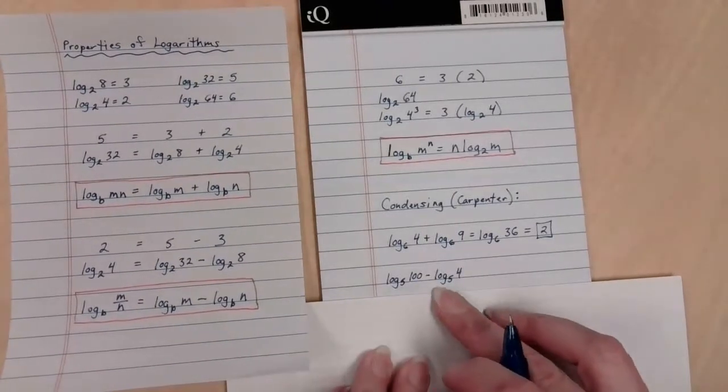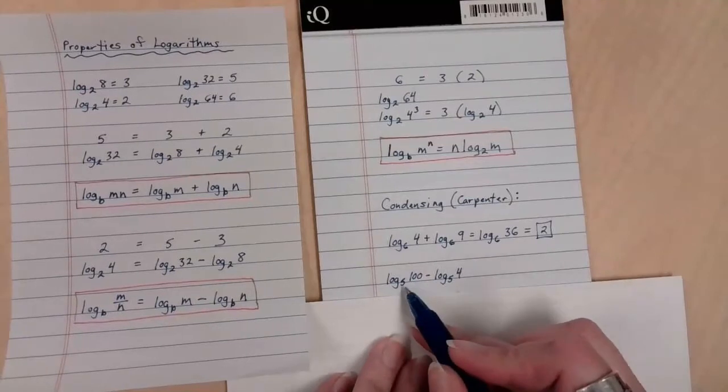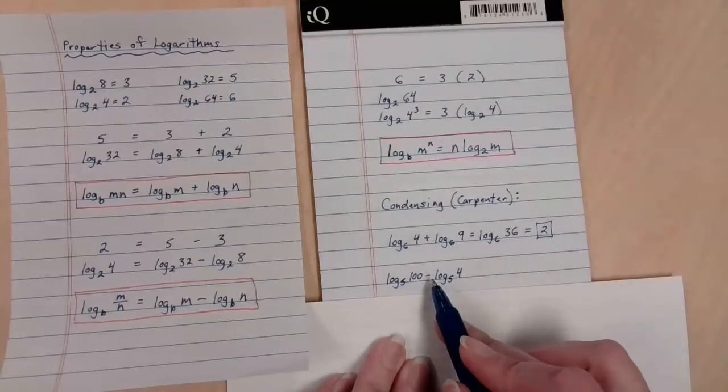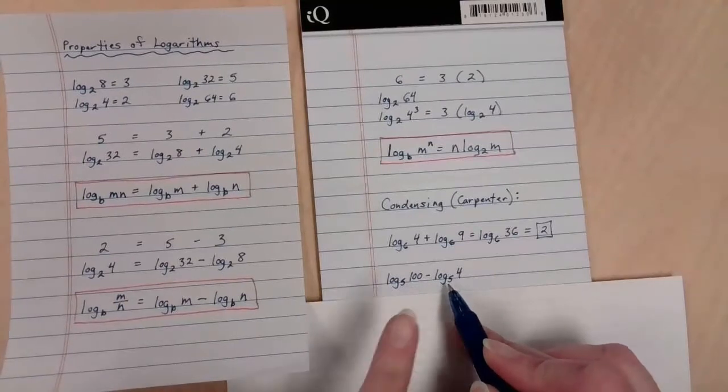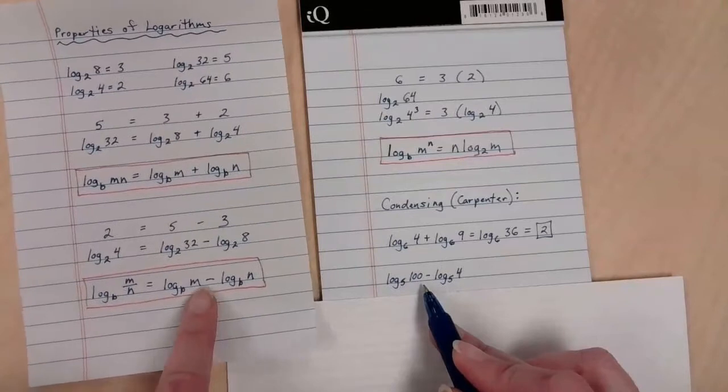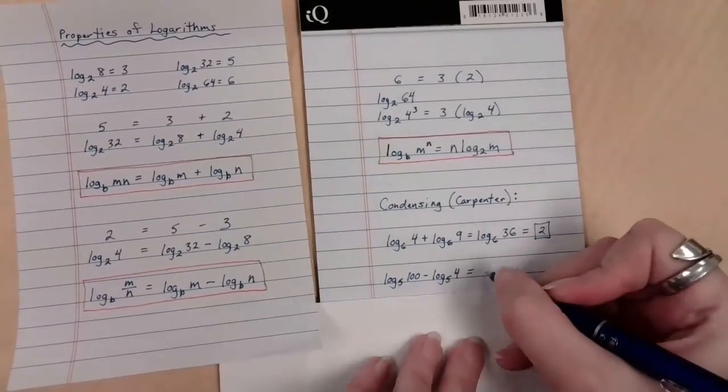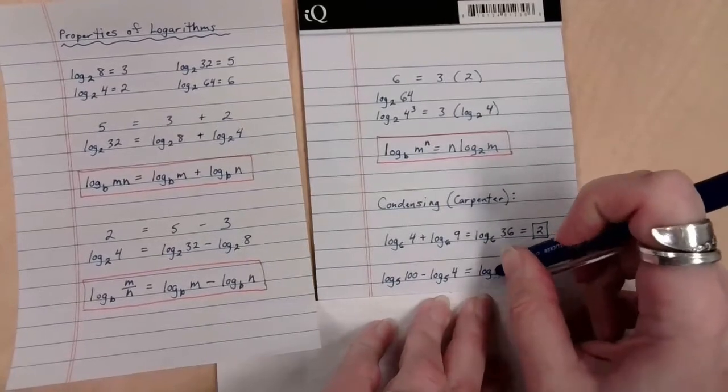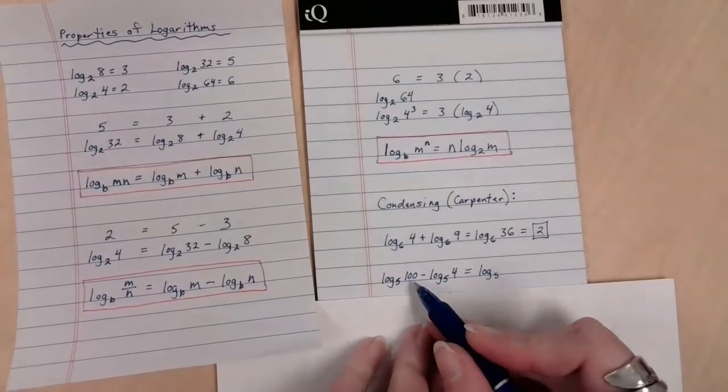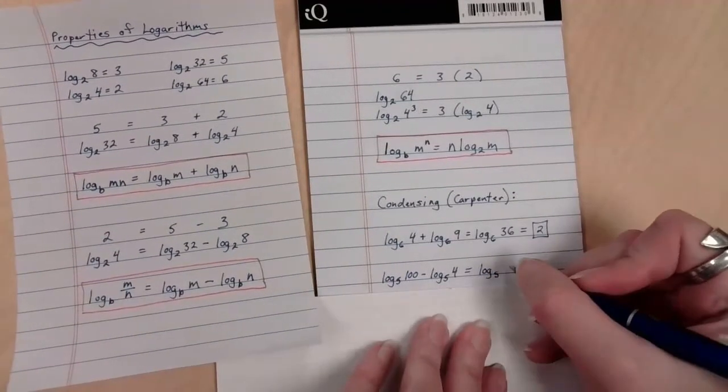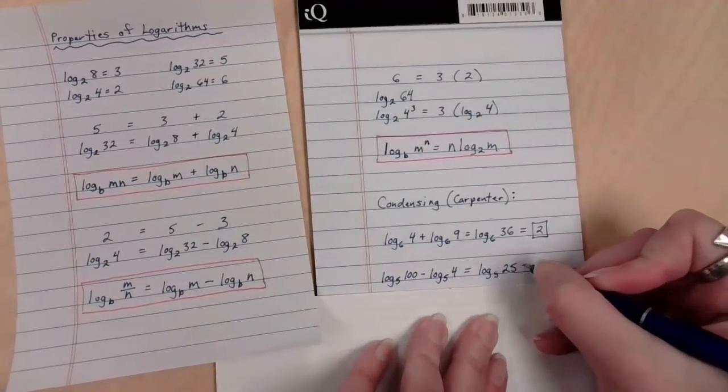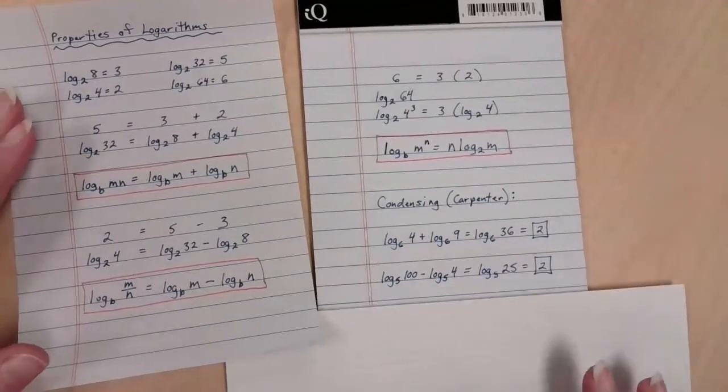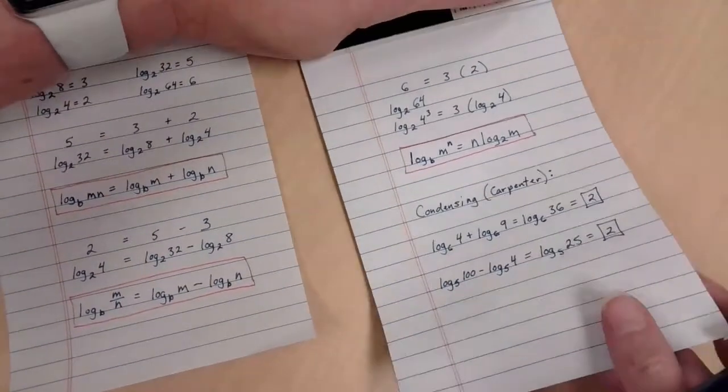Another one of these guys. Log base 5 of 100 minus log base 5 of 4. Again, I can't do either one of them easily. I don't know 5 to what power makes 100. But if I'm subtracting these two and I see two logs with the same base, oh, look! Two logs being subtracted, same base. What am I going to do? I'm going to keep the log, and I'm going to put a 5 there. And since it's subtraction, I'm going to do 100 divided by 4. 100 divided by 4 is 25. And this is something nice and neat. 5 to what power makes 25? 2. Are all the answers for these 2s? No, they are not. This is just happening right now because these are the examples that I set up.